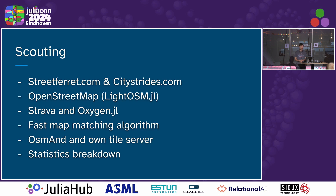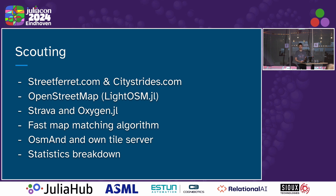Existing websites like Street Ferret and CityStrides.com are out there — feel free to use them if you don't want to program or aren't a Julia nerd. But there was some functionality I was missing, so I built my own. I'm really glad OpenStreetMap exists; otherwise I wouldn't have. I use LightOSM.jl in Julia, Strava to track my GPS data, Oxygen.jl for API stuff, and a navigation app since I didn't want to develop one myself.